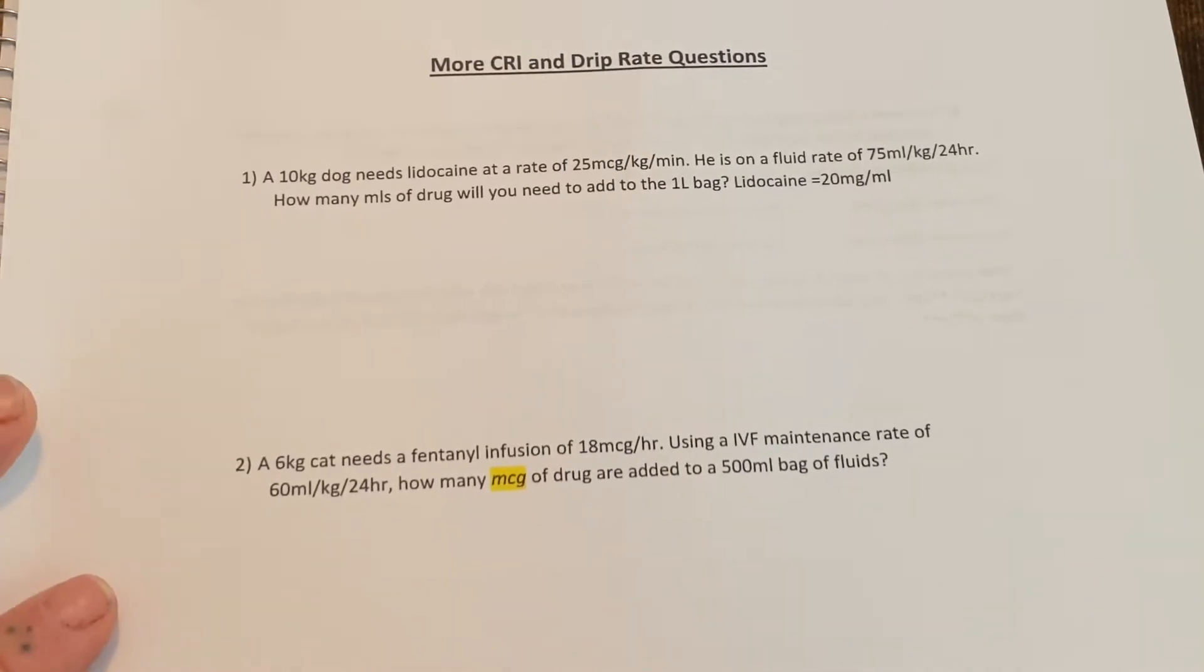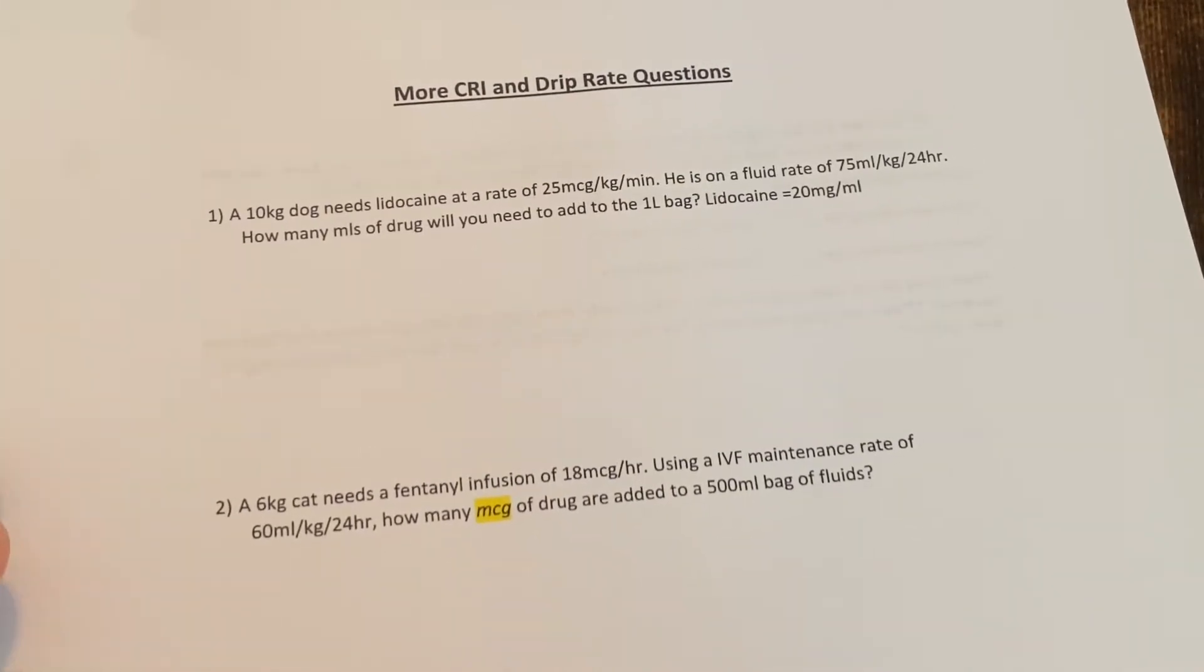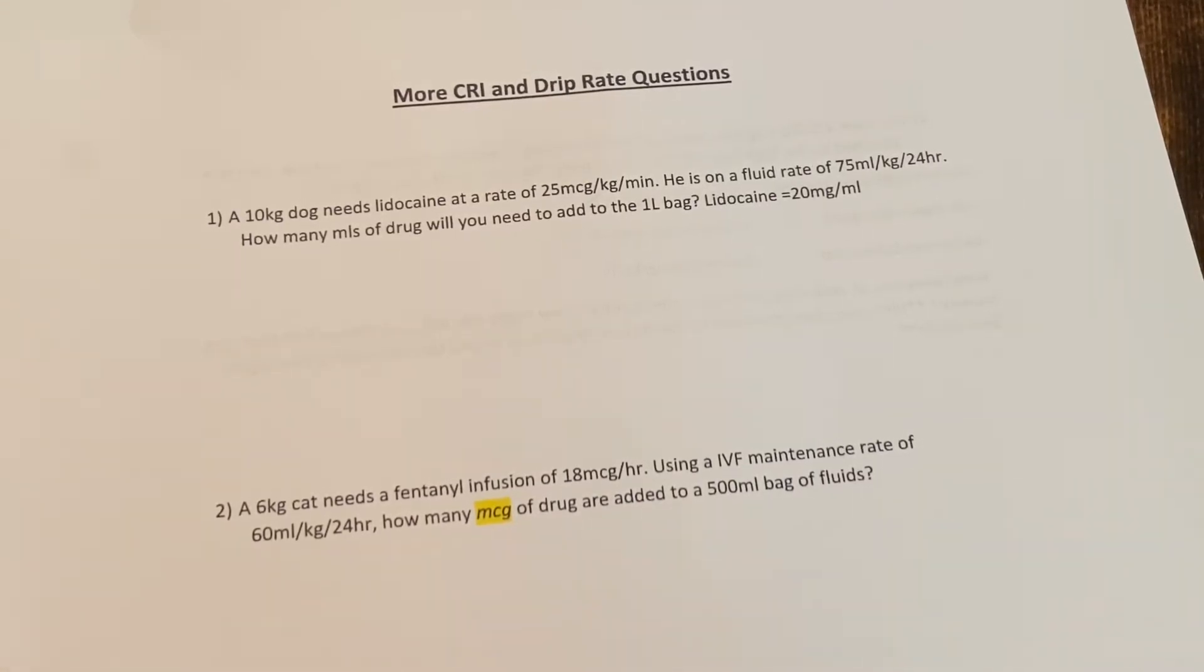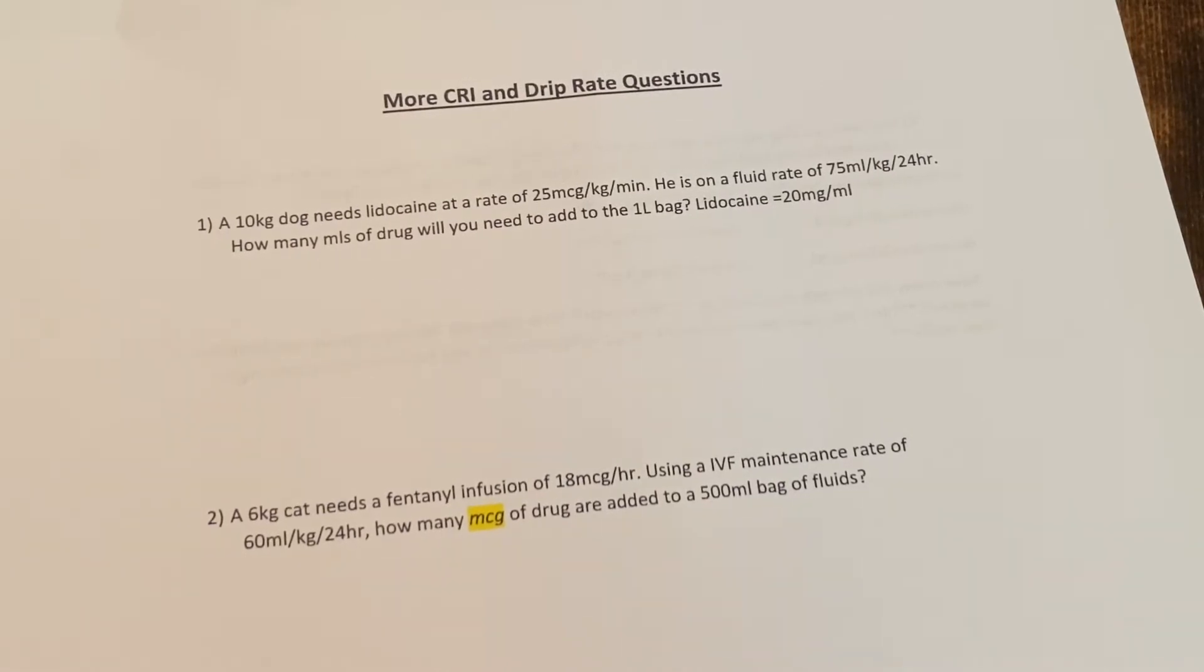So the first question is a 10 kilogram dog needs a 25 microgram per kilogram per minute constant rate infusion of lidocaine. He's on a fluid rate of 75 mils per kg for 24 hours and we need to know how many mils of the drug to add to a one liter bag. A one liter bag is a bit much. Usually we would be adding it to a burette or something smaller, but this is one of the questions that's really similar in the assignment.